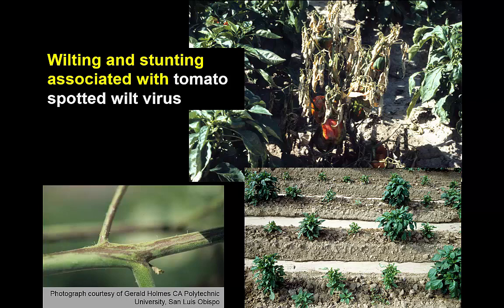It doesn't always show up with those classic ring spot symptoms. You may have necrotic lesions without ring spots. Wilting is also very commonly associated with it. Tomato spotted wilt gets its name because the virus may cause lesions — dead areas — to develop in stems, which will then prevent the movement of water and nutrients, so you'll get wilting. It may not completely kill the plant; it may just stunt the plant, sometimes severely. Here we see lesions on the stem of a plant from tomato spotted wilt, and a pepper plant that has essentially entirely wilted from the effects of tomato spotted wilt.